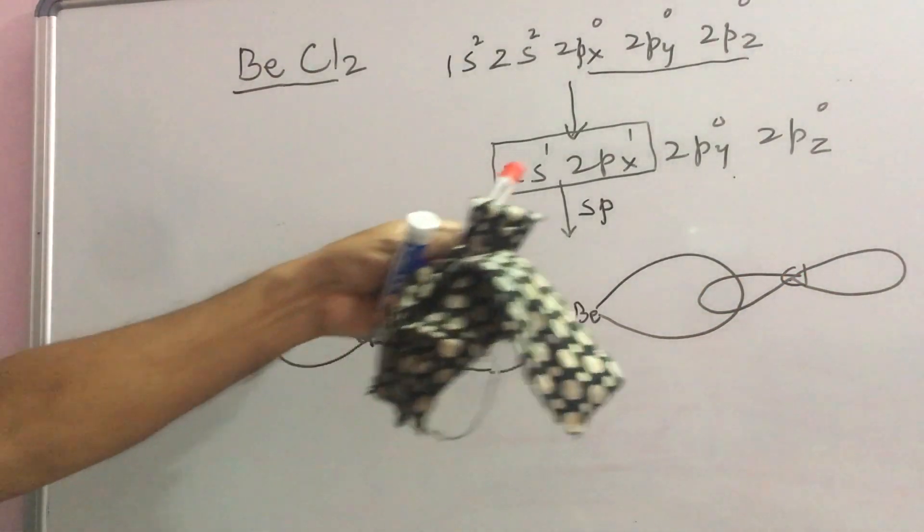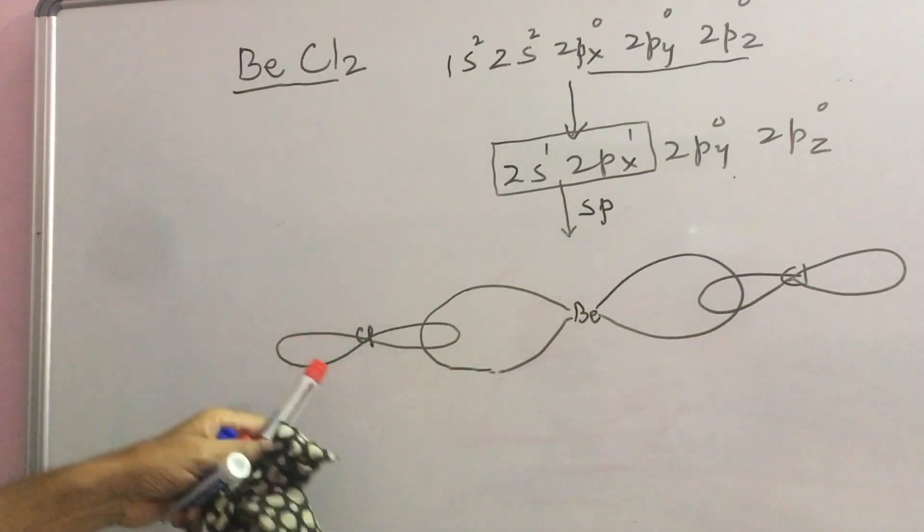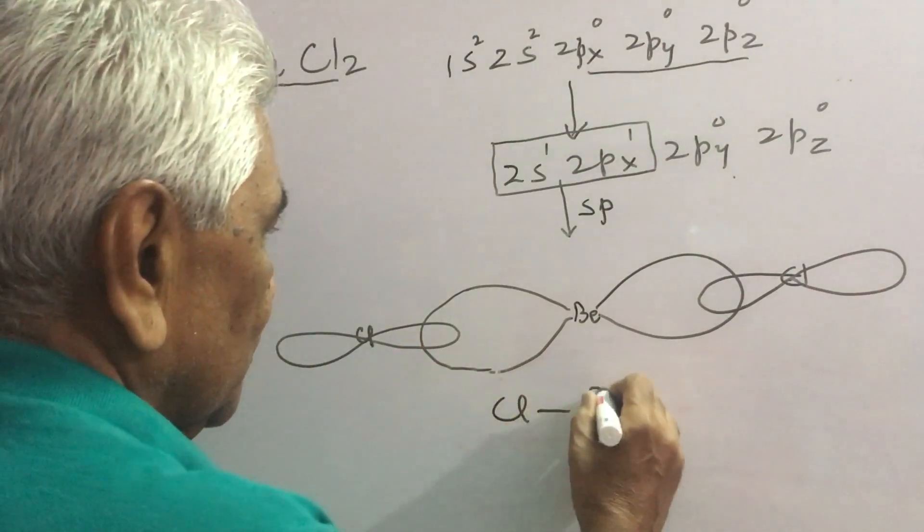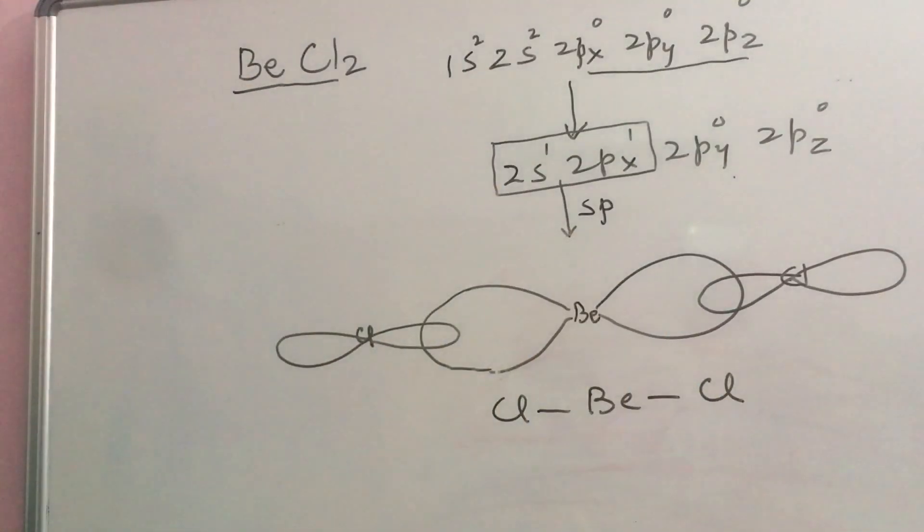This is B-Cl bond a sigma bond, B-Cl a sigma bond, BeCl2. The other orbitals they are vacant. So, this is actually bivalent BeCl2 collinear.